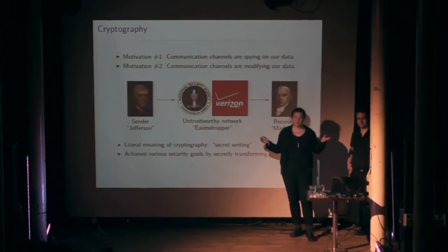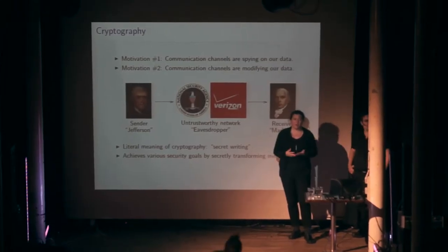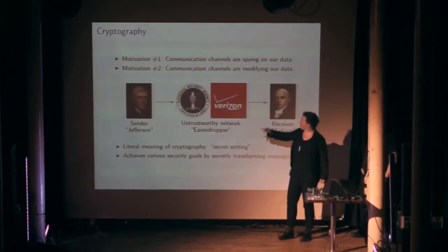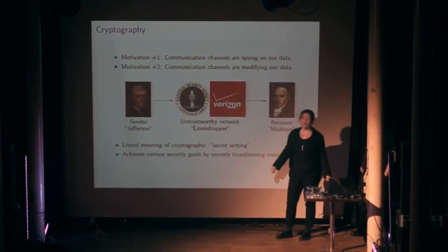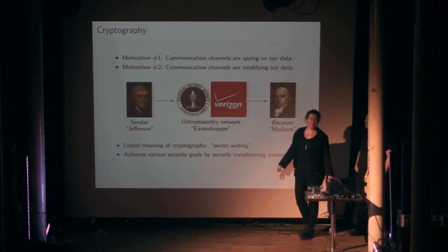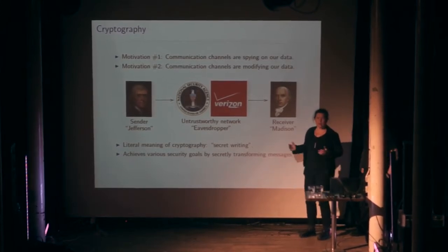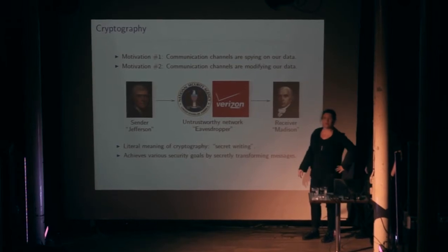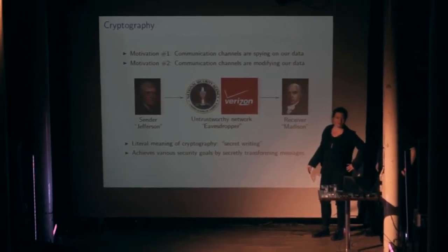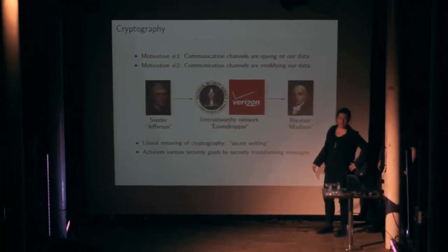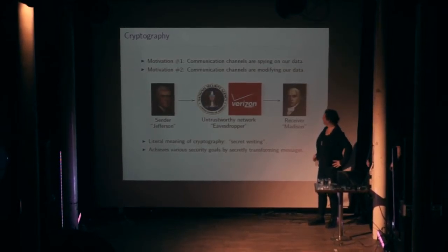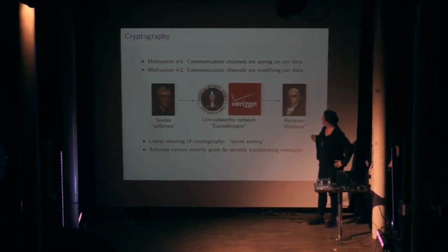To give a short background of cryptography — the science we're both working in — what we want to do is send messages. Here we have our senders, Jefferson and Madison, whom you might remember from the time of American independence. They are plotting to get rid of the British occupation and are under constant surveillance, because if they succeed, there might be an independent state.